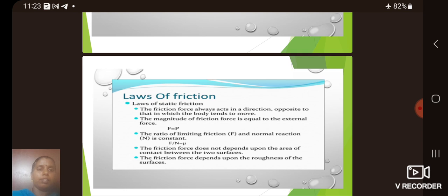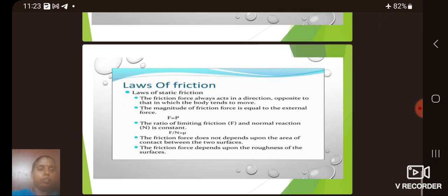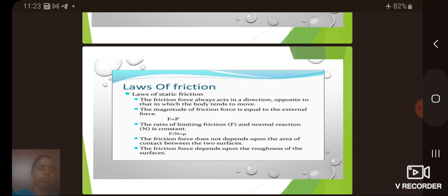Then next we see the important laws of friction. Laws of static friction are: the friction force always acts in a direction opposite to that in which the body tends to move; the magnitude of friction force is equal to the external force, that is f equal to p; the ratio of limiting friction to the normal reaction is constant, that is f by n equal to mu; the friction force does not depend upon the area of the contact between the two surfaces; the friction force depends upon the roughness of the surfaces.